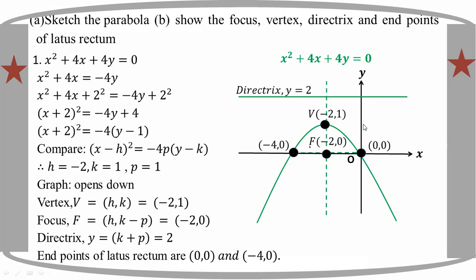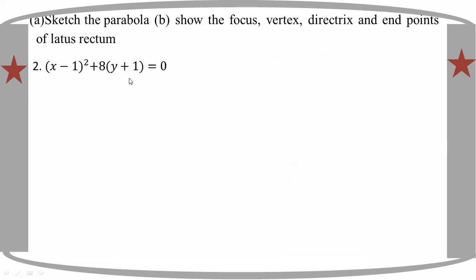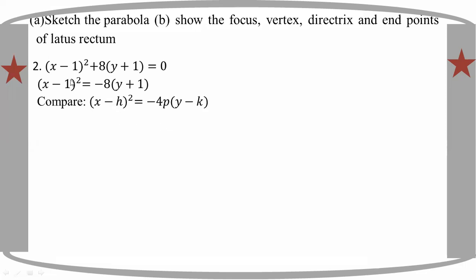This is the endpoint of the latus rectum in the graph. For the second example, we look at (x minus 1) whole square. Comparing: h minus h whole square equals minus 4p(y minus k), and h minus k whole square equals minus 1. So the next square equals minus 2.